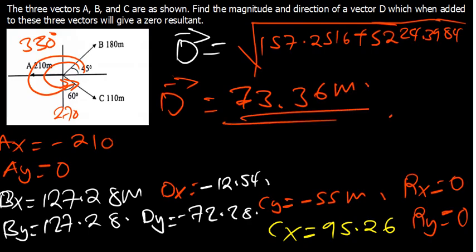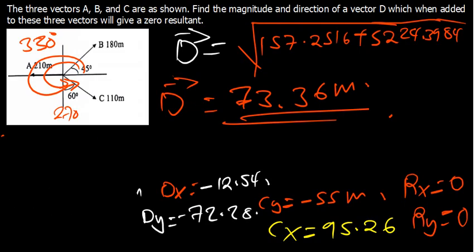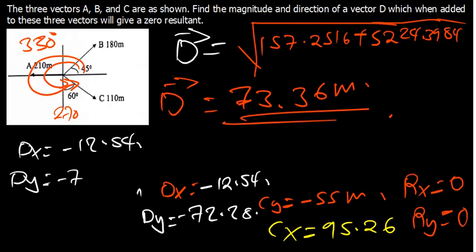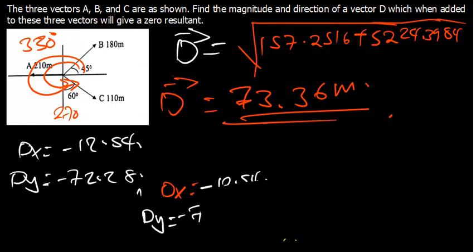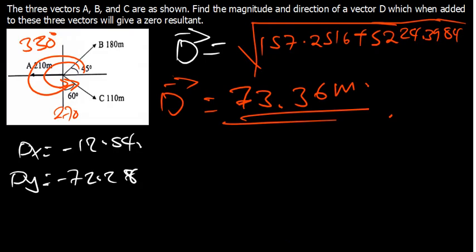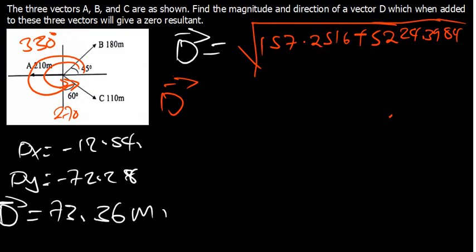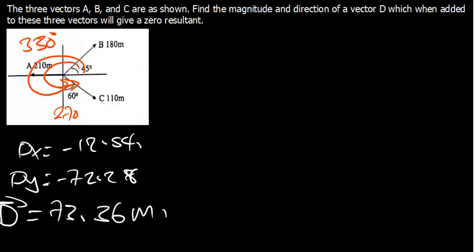So the magnitude is 73.36 meters. Now to find the direction — the angle. We check the signs of the components first. DX is negative and DY is negative, meaning the angle falls in the third quadrant, where both X and Y are negative.